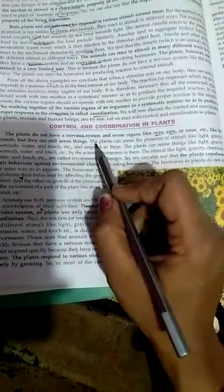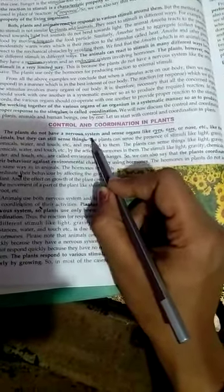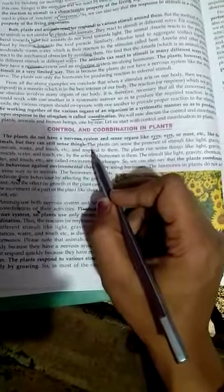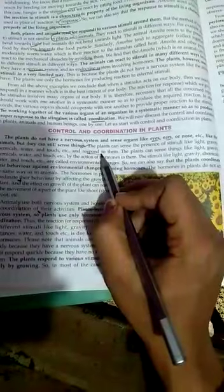But animals have sense organs, and plants just sense stimuli like light, water, and touch, and respond to them.